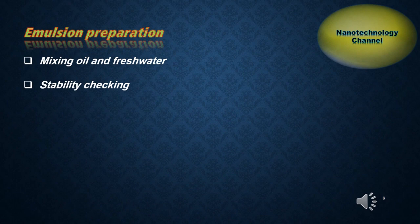The oil-in-water emulsions should be prepared using a sample of crude oil and fresh water, and then the stability of these emulsions should be checked with a UV-Vis spectrophotometer.